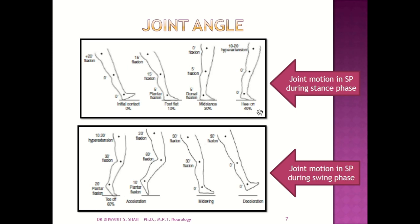At heel-off, there is 0 degrees of ankle movement and 10 to 20 degrees of hip hyperextension. At toe-off, there is 60 degrees of plantarflexion, 20 degrees at the ankle, 30 degrees of knee flexion, and 10 to 20 degrees of hip hyperextension. In the acceleration phase, there is 10 degrees of plantarflexion, 60 degrees of knee flexion, and 20 degrees of hip flexion. At mid-swing, 0 degrees at the ankle, 30 degrees of knee flexion, and 30 degrees of hip flexion. In terminal swing, 0 degrees at both ankle and knee, and 30 degrees of hip flexion.